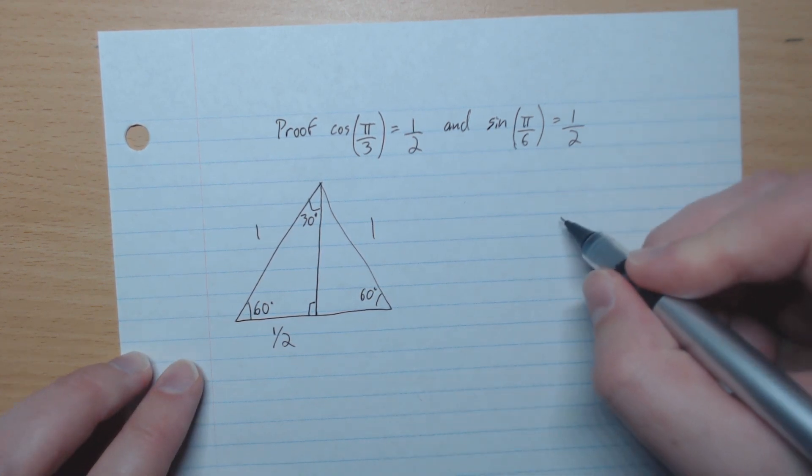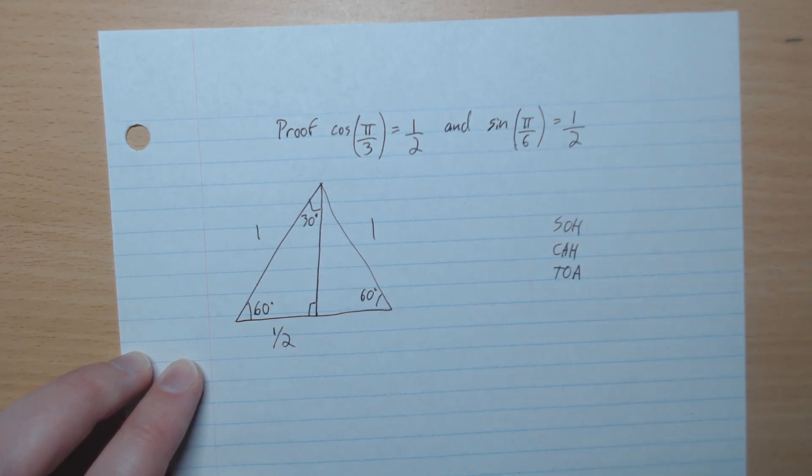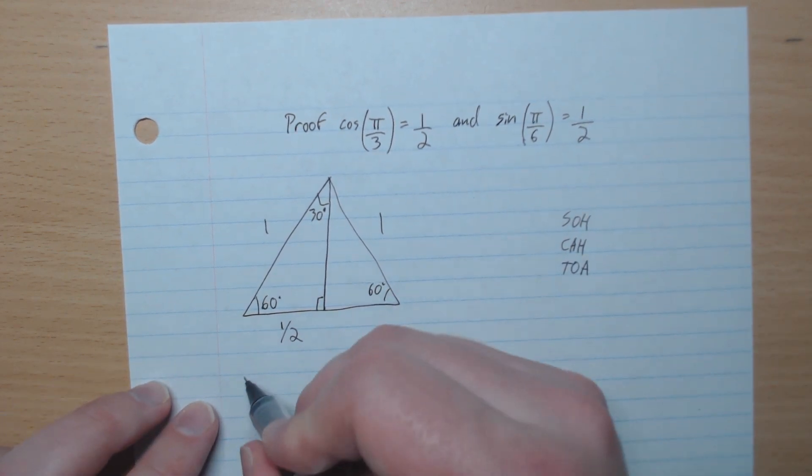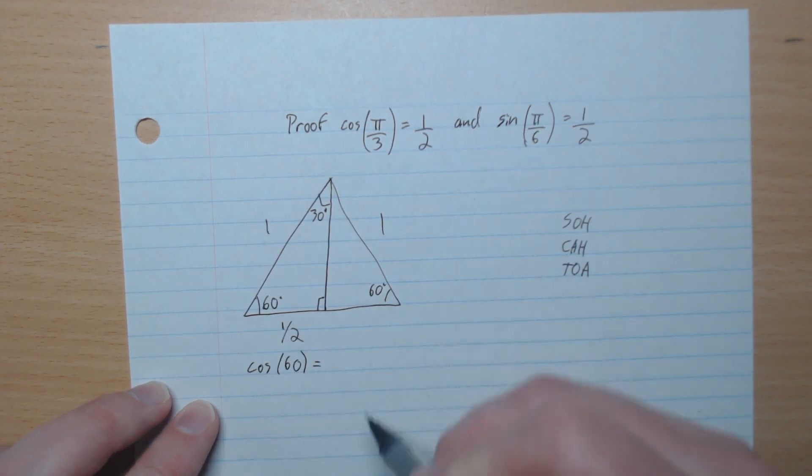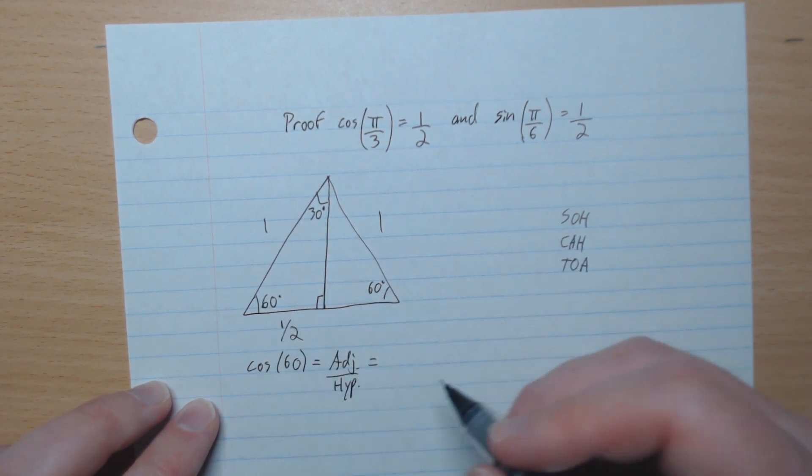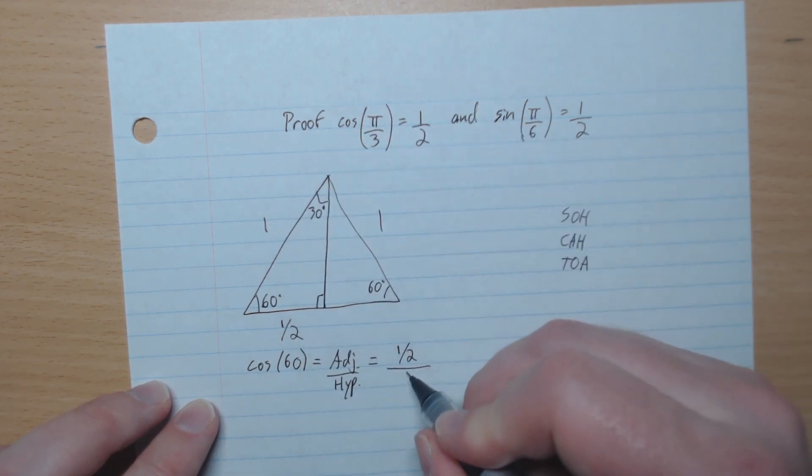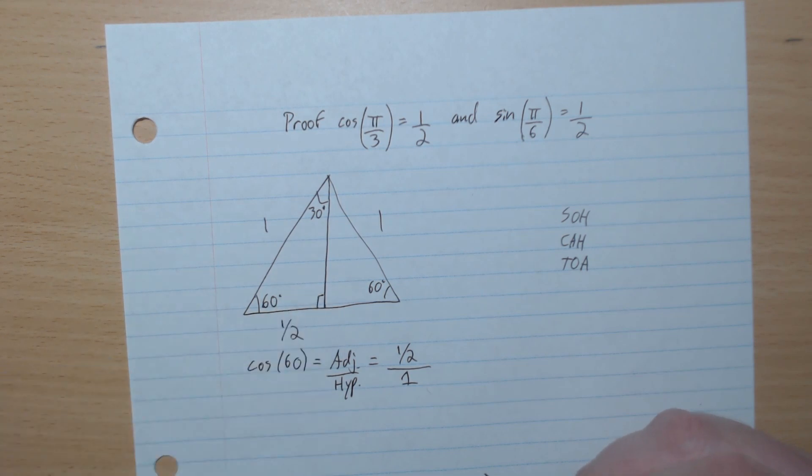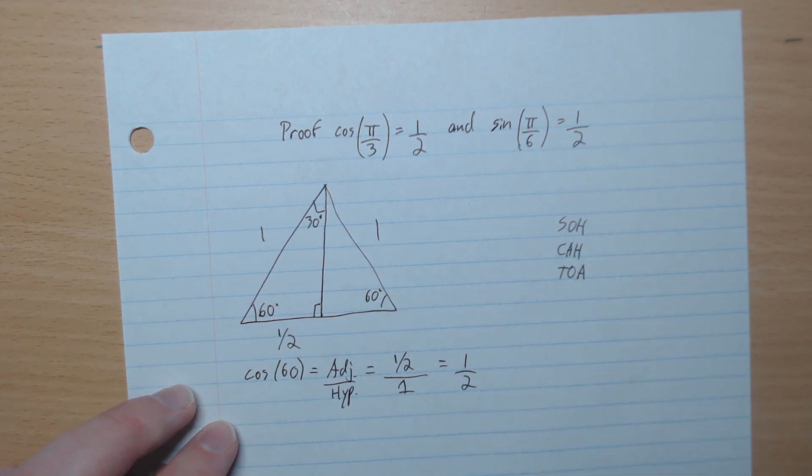And so looking at SOHCAHTOA, we'll start with the cosine. A cosine of 60 is adjacent over hypotenuse. And adjacent to the 60 is a half, like that, and the hypotenuse is 1. So we're looking at this triangle like this. Cosine of 60 is equal to adjacent over 1, which equals a half. And that's it.